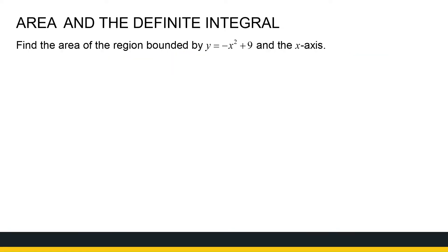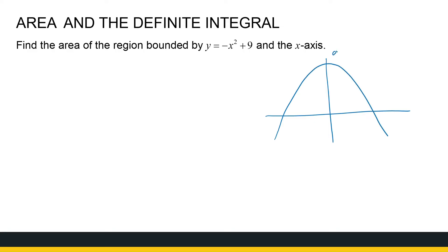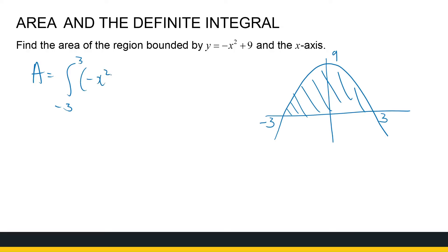If I want the area of the region bounded by the function y equal to minus x squared plus 9 and the x-axis — with these kinds of questions, you've got to sketch them, because if you cannot sketch them, you don't know what you're working with. So I want the area bounded by this curve and the x-axis, so this is the area I'm looking for. That area is the definite integral from minus 3 to 3 of minus x squared plus 9 dx.